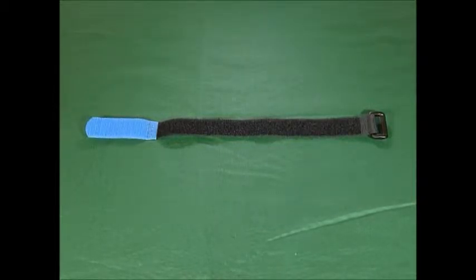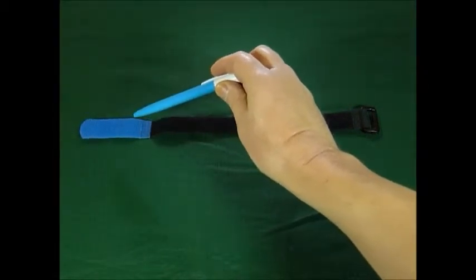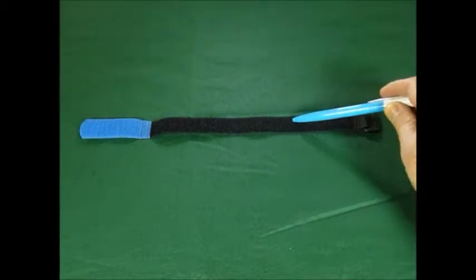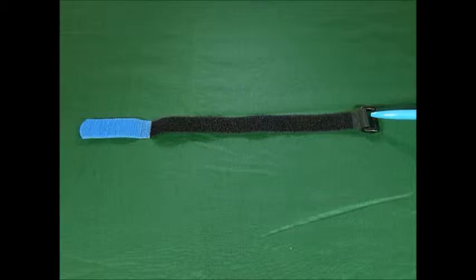This particular strap is a hook and loop cinch strap. On one end you have the hard scratchy hook material. Running down the length, you have the soft velvety loop material. On the far end, you have a securing buckle, usually a plastic ring, but it can be substituted with a metal ring or different type of buckle.